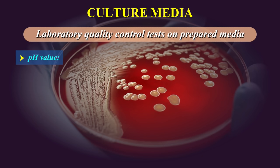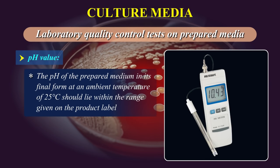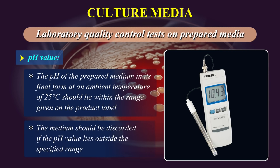pH value. The pH of the prepared medium in its final form at an ambient temperature of 25 degrees centigrade should lie within the range given on the product label. The medium should be discarded if the pH value lies outside the specified range.